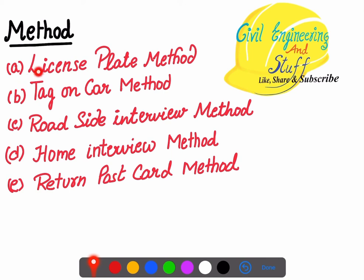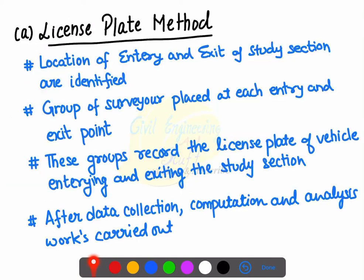There are five methods by which origin and destination studies are conducted: the license plate method, the tag on car method, the roadside interview method, the home interview method, and the return postcard method. Let us discuss each one.